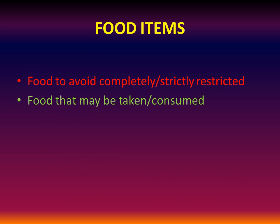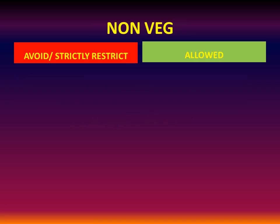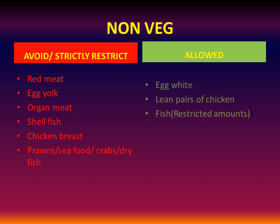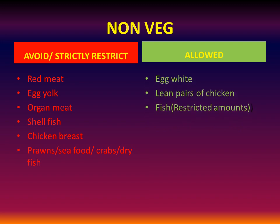This video revolves around foods to be completely avoided or strictly restricted, and foods that may be consumed. Coming to the non-veg items: don't take red meat, egg yolk, organ meat, shellfish, chicken breast, prawns, seafood, crabs, or dry fish. Whereas egg white, lean paste of chicken, and fish in restricted amounts can be taken.